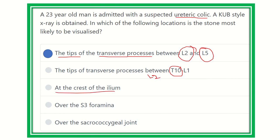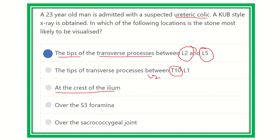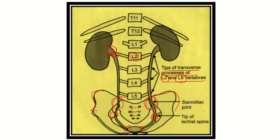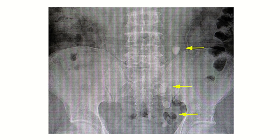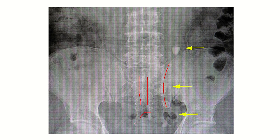Regarding the crest of the ilium — that is not true because the iliac crest is located here, and the ureter is far away from the iliac crest. Regarding over the sacral foramina — that is also not true because the sacral foramina are here on both sides; there are eight sacral foramina total, and the ureter is located more lateral to the sacral foramina. And over the sacrococcygeal joint is also not true because the sacrococcygeal joint is at the midline, between the sacrum and coccyx, but the ureter lies away from the midline.